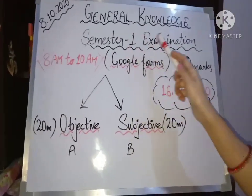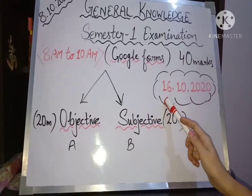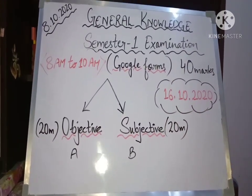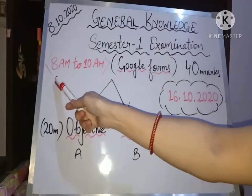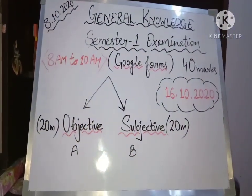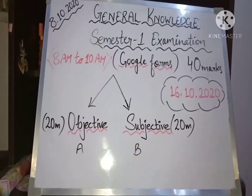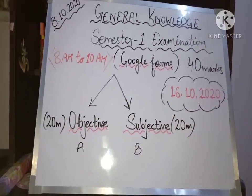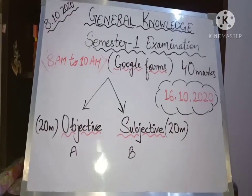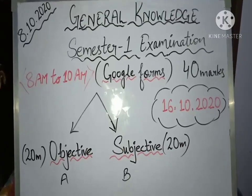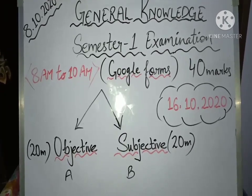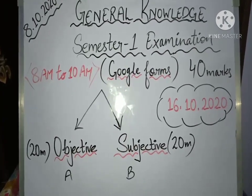Children, your general knowledge semester 1 examination will be on 16th October 2020 and the timings will be 8 a.m. to 10 a.m. It will be through Google Forms which you have already done in your PT1 exams and in class test also. This examination will be of 40 marks and it is divided into two parts.